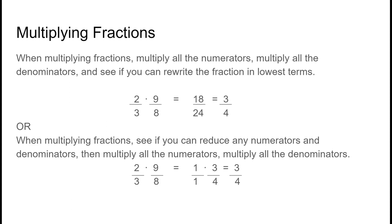If we look at two over three times nine over eight, we can multiply across: two times nine gives 18, three times eight gives 24, and then simplify — they're both divisible by six. Or you can reduce first: two and eight have a common factor of two, so divide both by two to get one and four. Three and nine have a common factor of three, so divide both by three, then multiply across to get three over four.